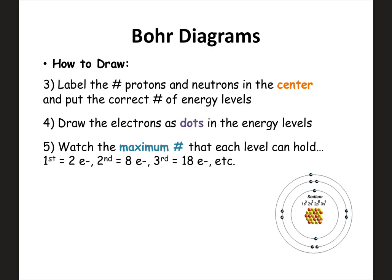Then you label the number of protons and neutrons in the center of the atom. You don't have to draw out all the protons and neutrons — just labeling how many there are of each is good enough. We'll put the correct number of energy levels, the correct number of rings. And then we need to show the electrons as dots in the energy levels. The energy levels can only hold a specific number of electrons: the first can only hold two, the second can only hold eight, the third can only hold 18, and so on.